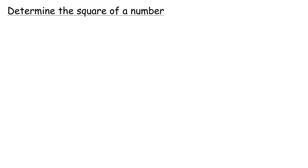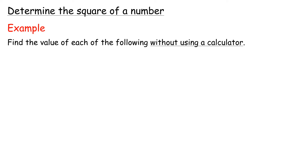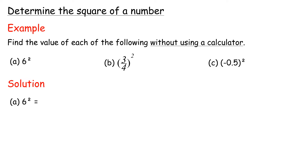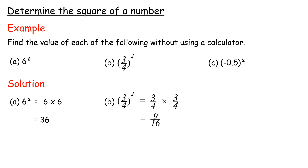Determine the square of a number. Example: Find the value of each of the following without using a calculator. Solution A: 6 squared equals 6 times 6 equals 36. B: 3 over 4 squared equals 3 over 4 times 3 over 4 equals 9 over 16. C: Negative 0.5 squared equals negative 0.5 times negative 0.5 equals 0.25.